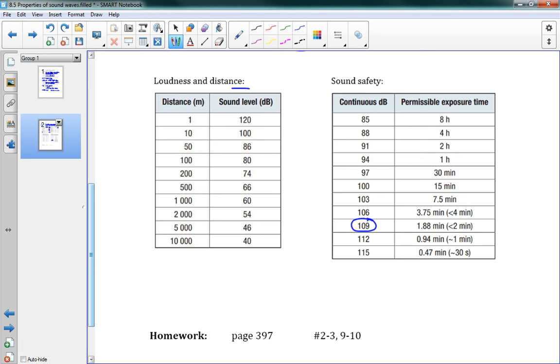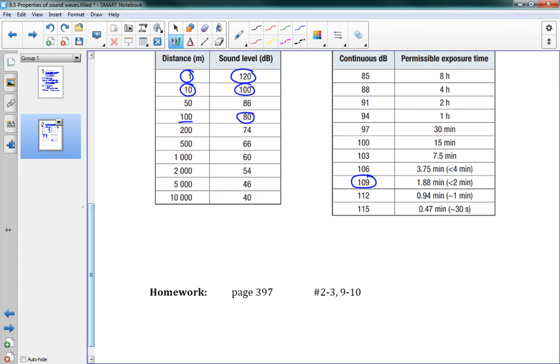And the last thing is this loudness and distance, which you can see that how sound sort of drops off as you get further from the source. So you can see that if I'm one meter away from the source of a sound, and if the sound level is 120 decibels at that distance, if I go to 10 meters, it drops off to 100. You can see it drops off fairly quickly, so that if I'm 100 meters away, 80 decibels, and you can see that really it drops off the further and further away you get from that source. That's the lesson. There's your homework at the bottom, and enjoy it.